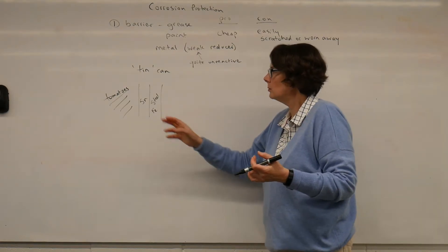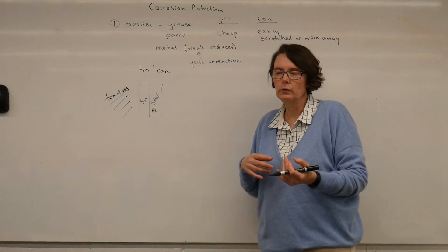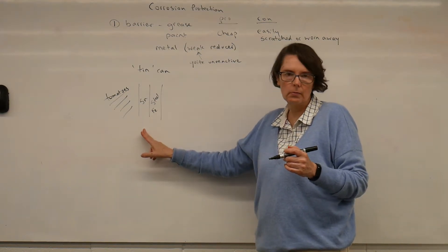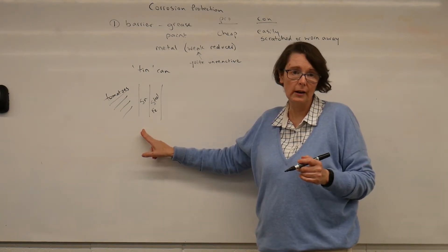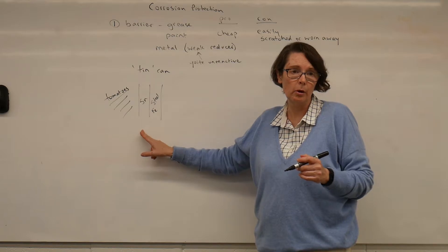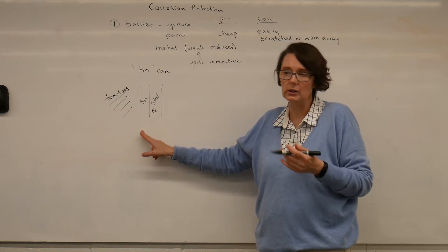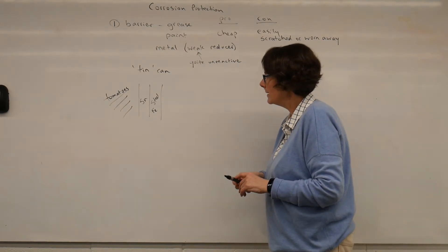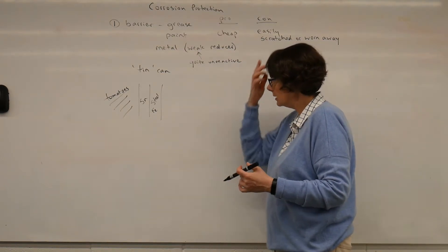But we don't want our, we don't like the taste of rusty tomatoes, and so we put in a barrier. And in fact, these days, most cans would actually be lined with plastic and polymer lining rather than tin, because that's even cheaper. But this is something that has been quite commonly done in the past.